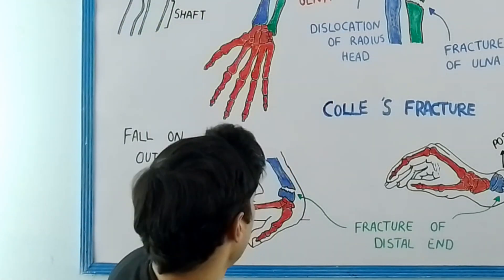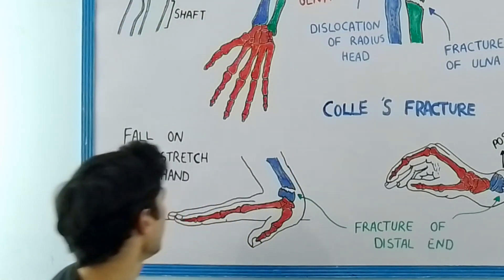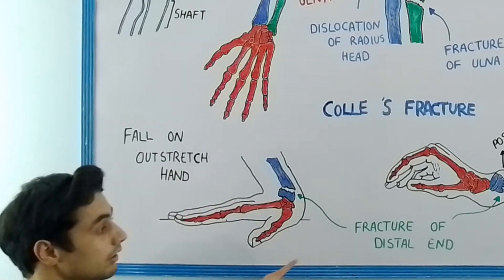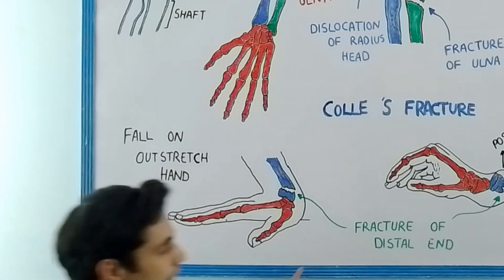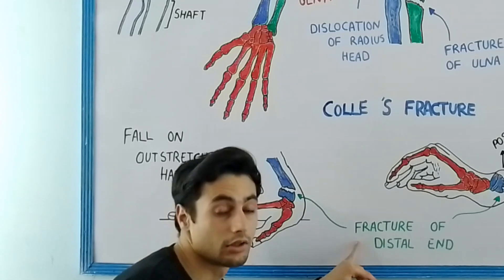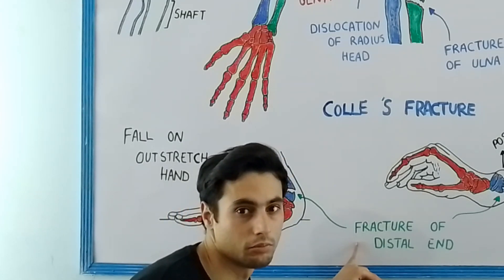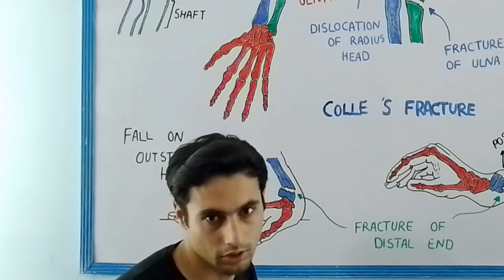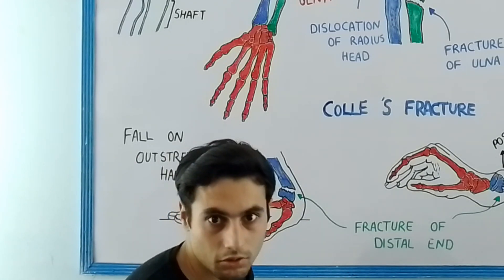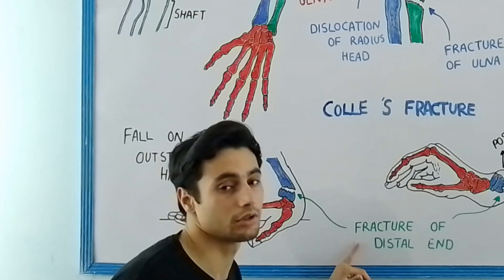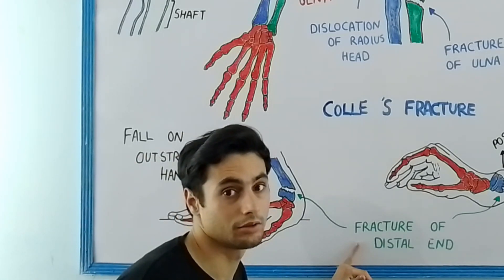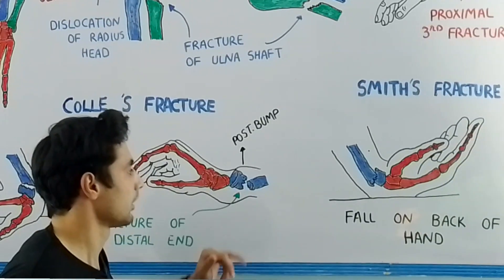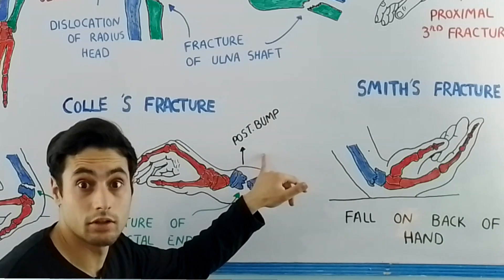Now let's talk about the Colles' and Smith's fractures. It happens when a person falls on the outstretched hand. There is a fracture of the distal end of the radius bone. Both Colles' and Smith's fractures involve a fracture of the distal end, but what is the difference between the two?